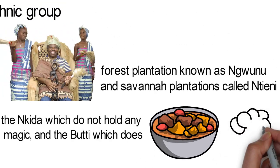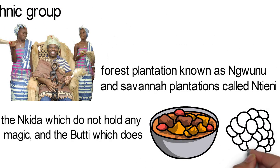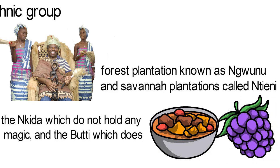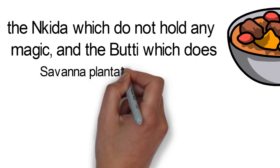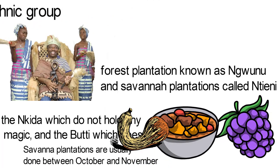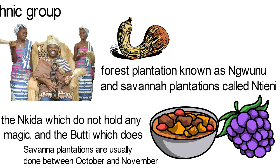The men fell the large trees in the new plantation, while the women carry out the planting, weeding and harvesting. Savannah plantations are usually done between October and November. Yams are the main crops planted but manioc is also planted sometimes.